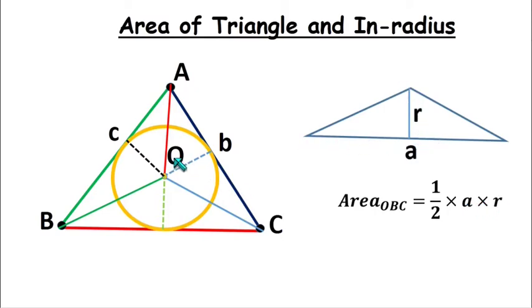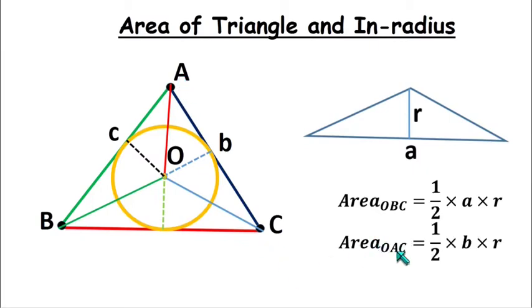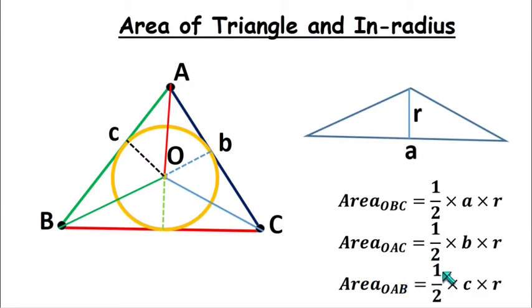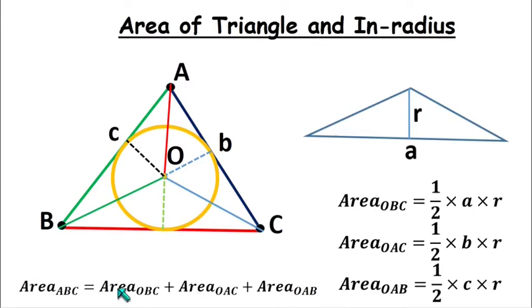Similarly, for triangle OAC, the area is half times b times r. And for triangle OAB, the area is half times c times r.